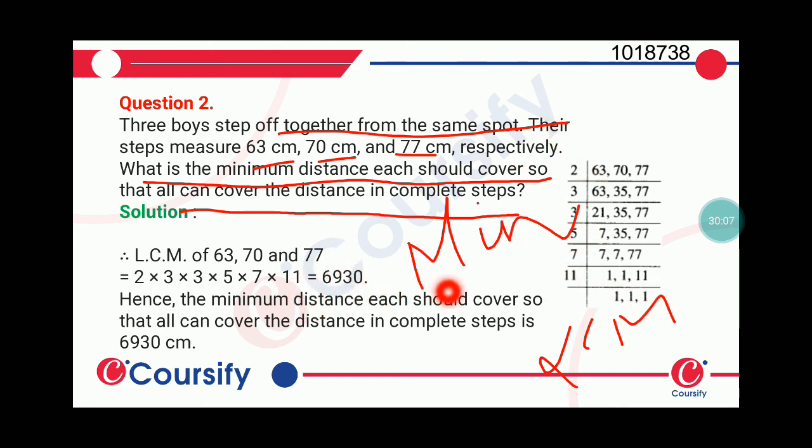And we get the minimum distance. What is the minimum distance that all can cover? The minimum distance where all the people will be in one position. That's the answer, which is the distance that all can cover in complete steps.